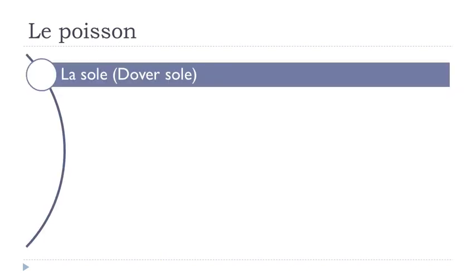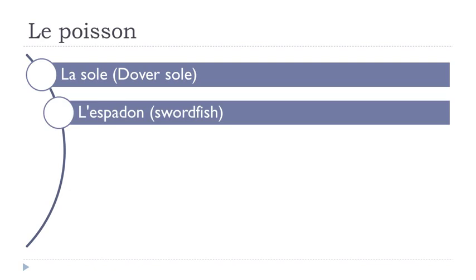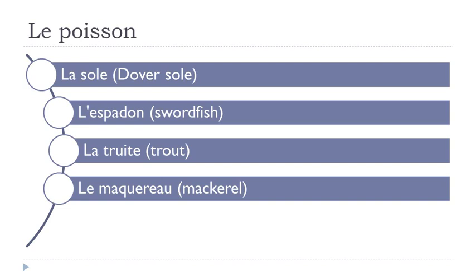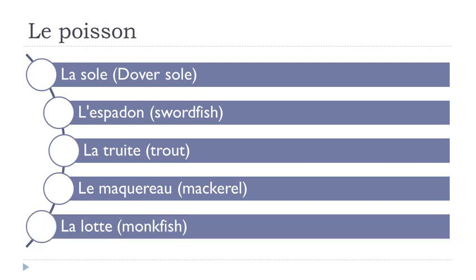La sole, l'espadon, la truite, le maquereau, la lotte. La sole — same thing, don't insist on the final E, it only gives you the L sound. Sole. L'espadon — O-N in your nose, nasal. On. Espadon. La truite — final E not pronounced. La truite.